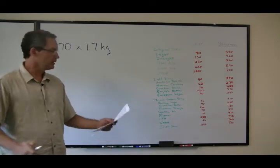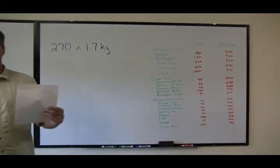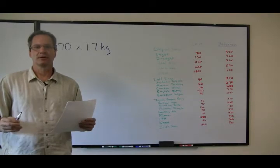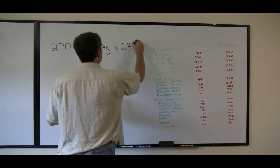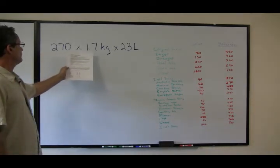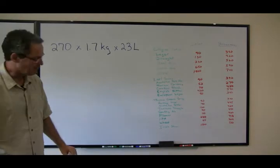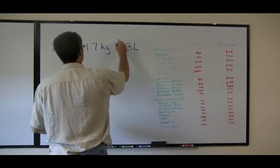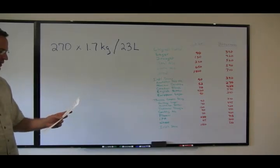And divide the total by the volume that you're going to make. Cooper's recommends 23 liters. You could do it at 20 liters, but your bitterness will be higher based on that. So normally, 23 liters would be the calculation here. You've got 270 in terms of the quoted bitterness times 1.7 kg, which is the weight. I made a mistake—you divide this total by the volume that you're producing. So, 23 liters.